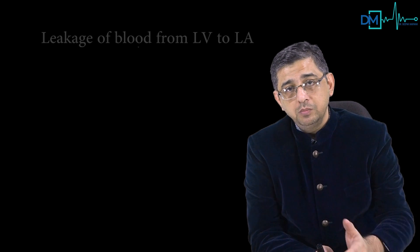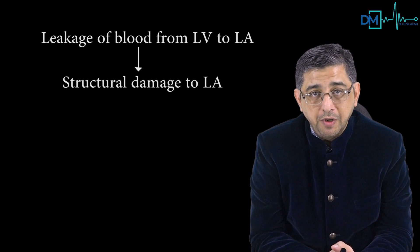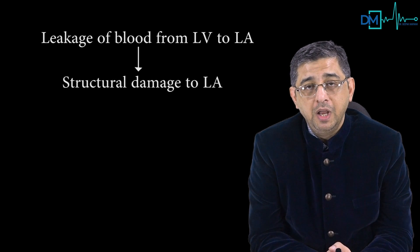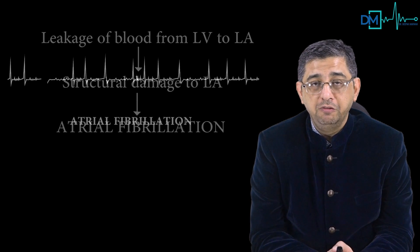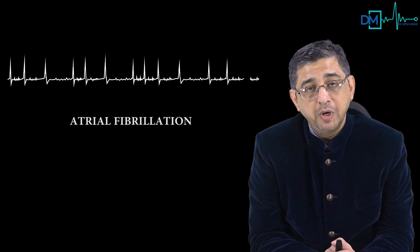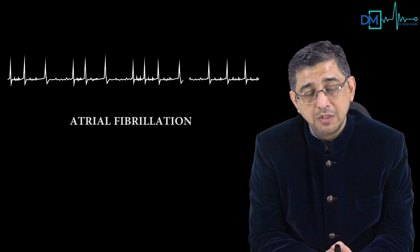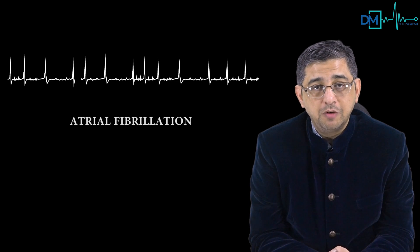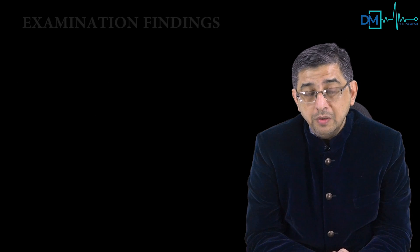A fourth arrhythmia may surprise you: because blood leaks from the LV to LA, structural damage to the left atria occurs over time, which can trigger atrial fibrillation. So remember, not only ventricular arrhythmias but also atrial tachycardia or atrial fibrillation can occur in MVP patients, due to structural damage from LV-to-LA blood leakage.